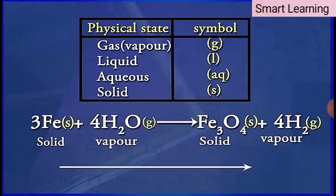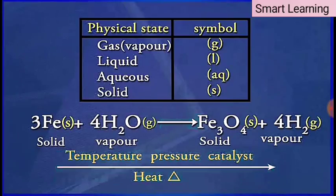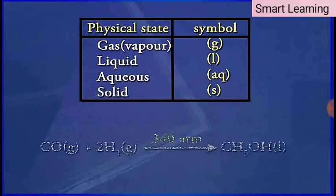Sometimes, the reaction conditions such as temperature, pressure, catalyst, etc., are also indicated above or below the arrow in the reaction. In this example, 340 atmospheres indicates the pressure at which this reaction occurs.